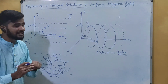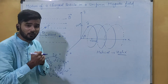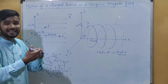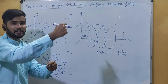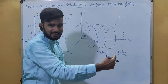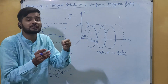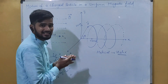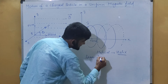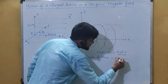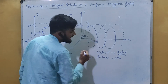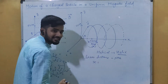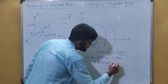Because of the v cos theta component, the particle moves a linear distance forward. The v sin theta component makes it move in a circle, while the cos component advances it linearly. At each and every point there is some linear distance covered by the particle as it completes each circle. This linear distance covered by the particle per revolution is called the pitch, represented as x.